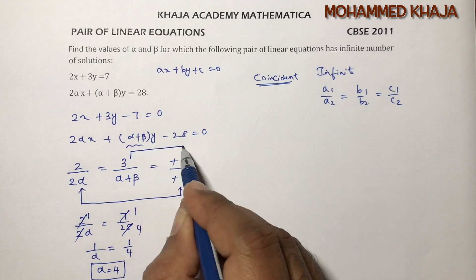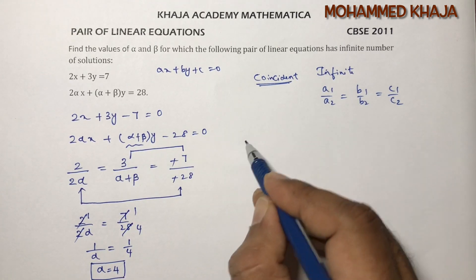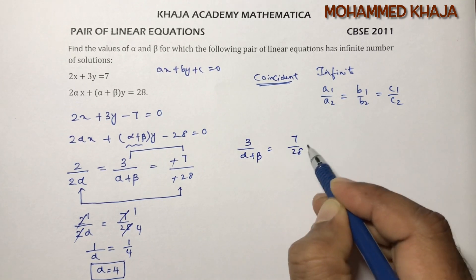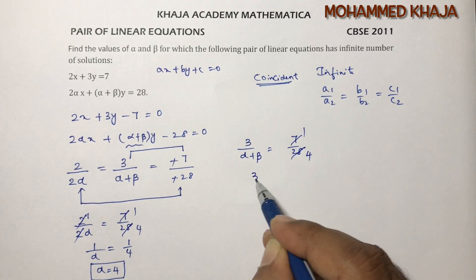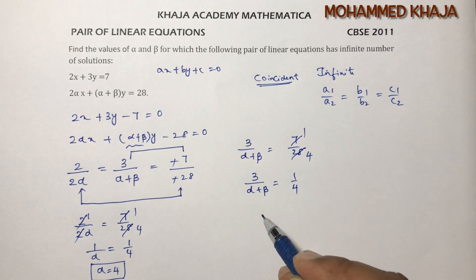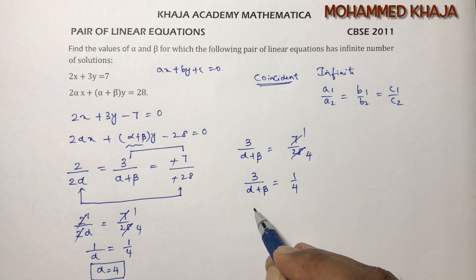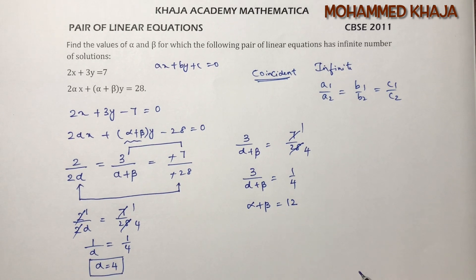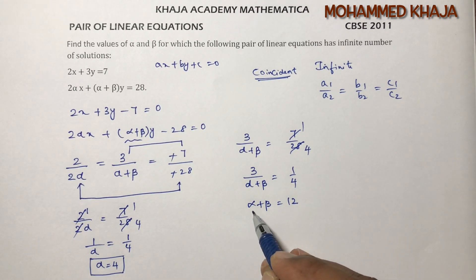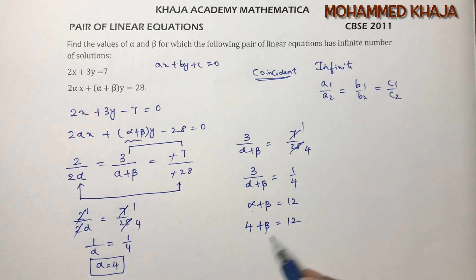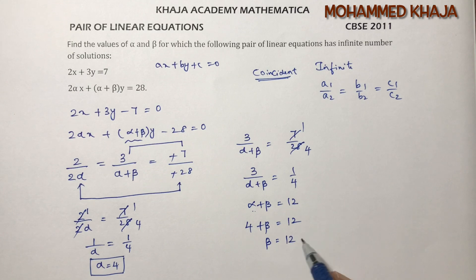Now I'll equate the second term with the third: 3/(alpha + beta) = 7/28, which simplifies to 3/(alpha + beta) = 1/4. Cross-multiplying gives alpha + beta = 12. Substituting alpha = 4: 4 + beta = 12, so beta = 12 - 4 = 8.